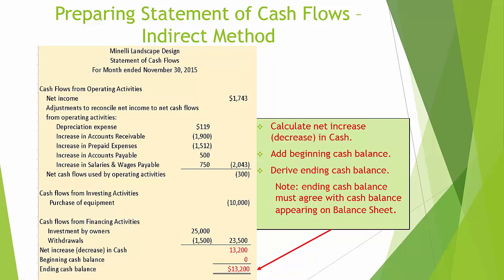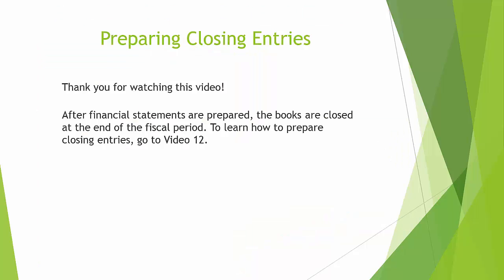Note that the ending cash balance must agree with the cash balance appearing on the balance sheet. Once we have calculated the net increase or decrease in cash, we add the beginning cash balance from the prior period. Since this is the first period, there is no prior period balance, and therefore the ending cash balance is $13,200. That's it. Thank you for watching this video. After financial statements are prepared, the books are closed at the end of the fiscal period. To learn how to prepare closing entries, go to video 12.